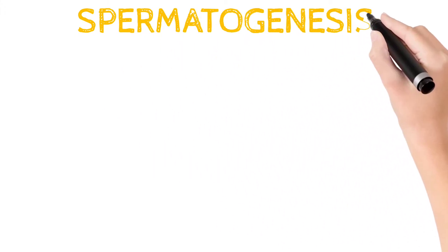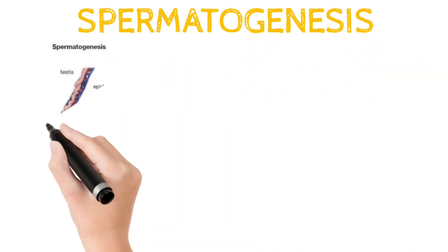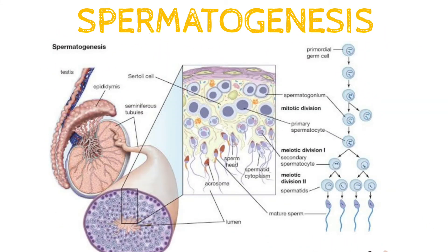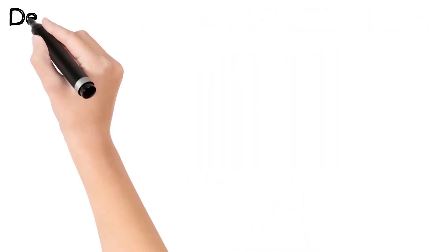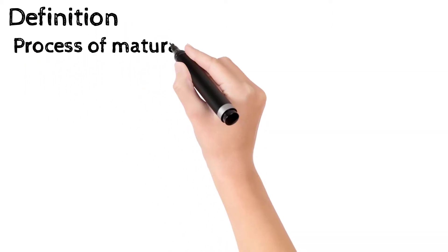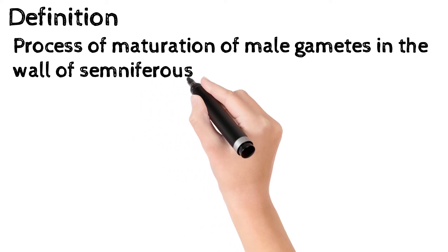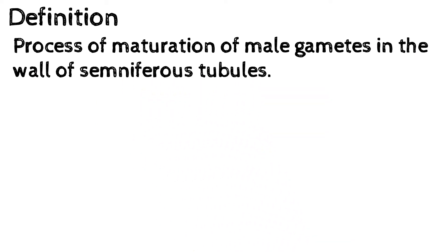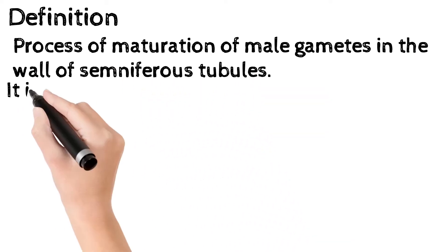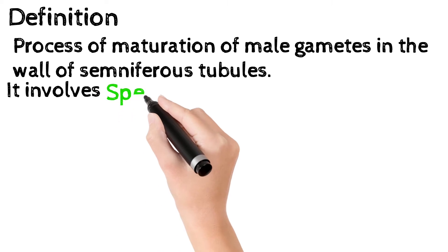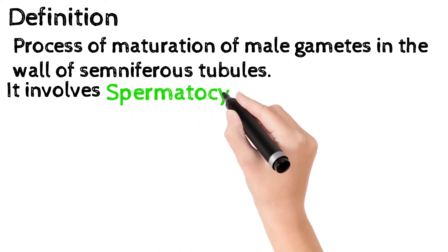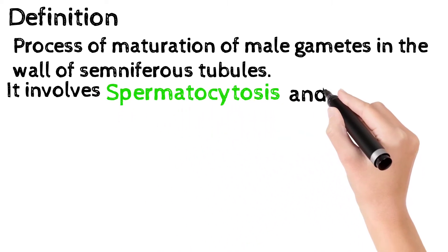Let's have a briefing on spermatogenesis. The definition is divided into two parts: what happens and where it happens. What happens is the process of maturation of male gametes; where it happens is in the wall of seminiferous tubules. So the definition is: process of maturation of male gametes in wall of seminiferous tubules.